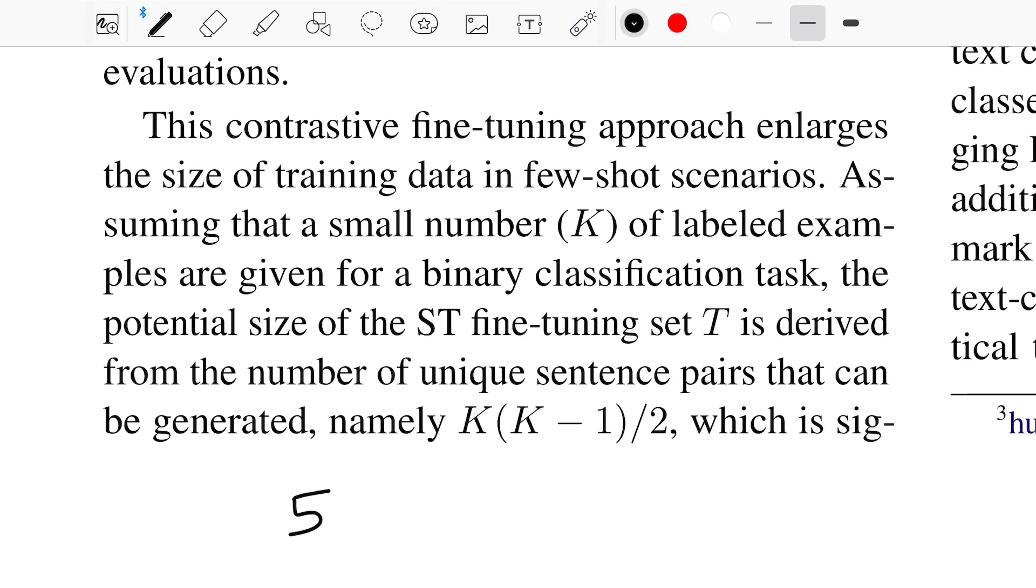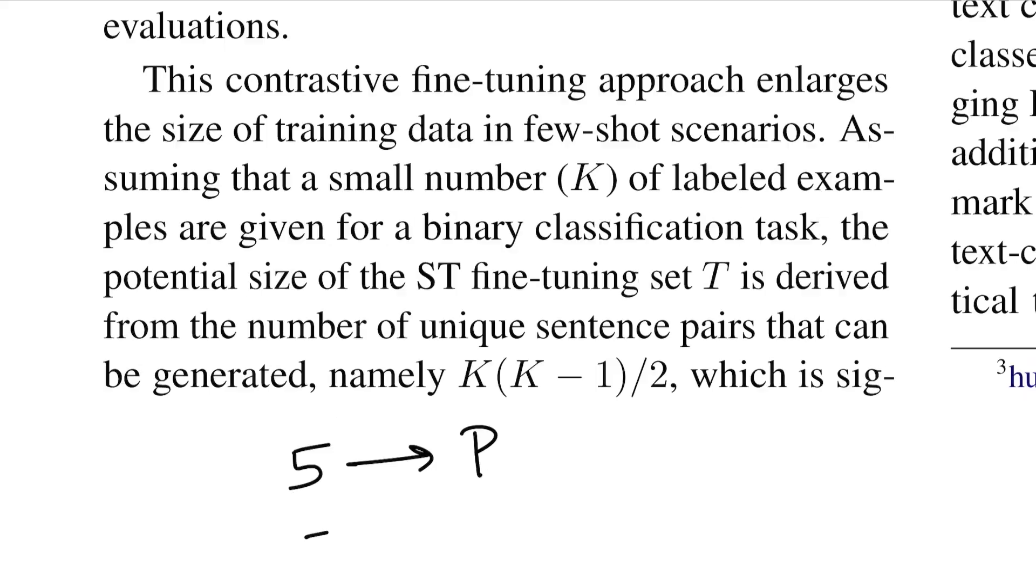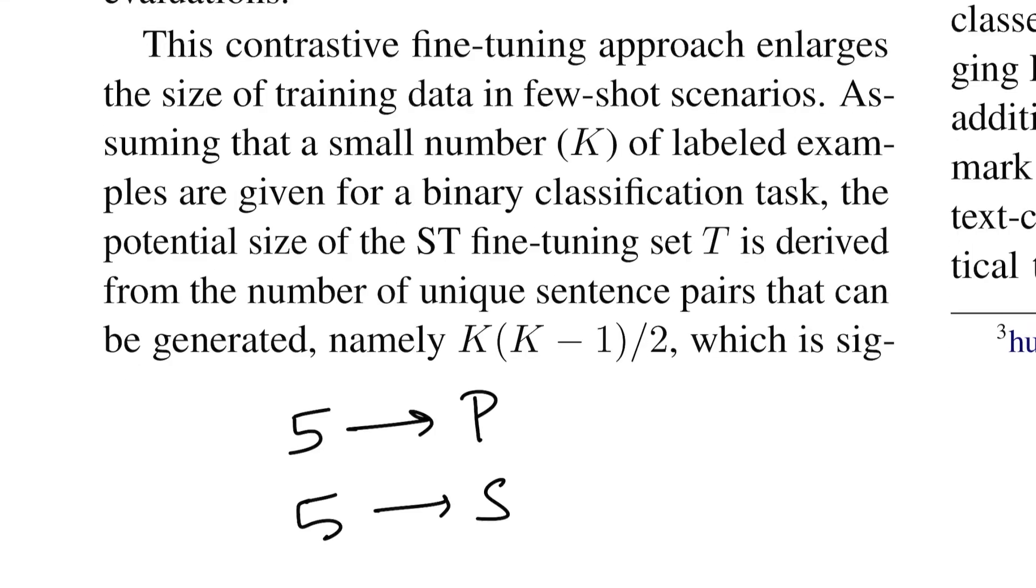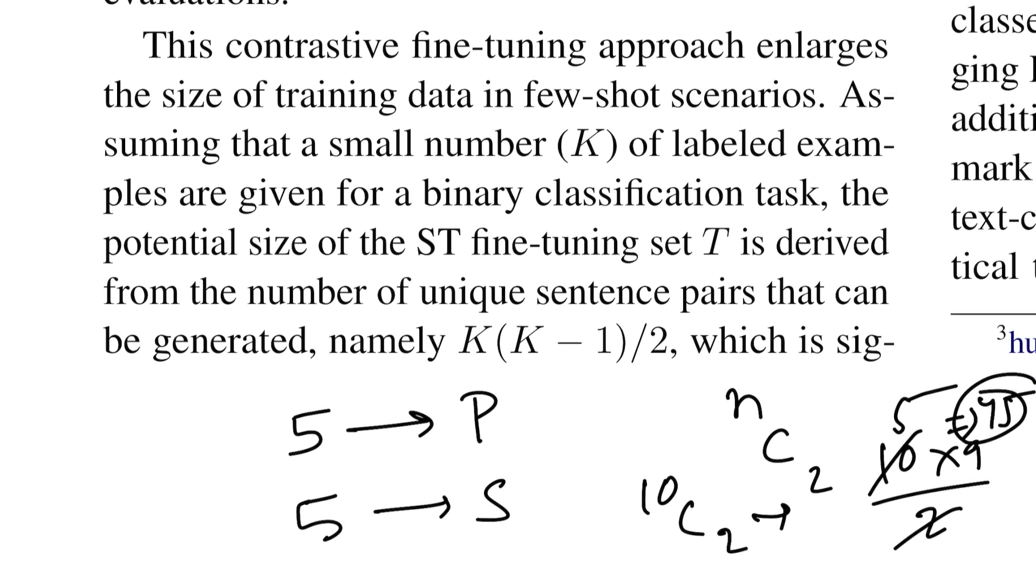You have five samples for the topic of politics and five text samples that represent sports. If you choose any two random samples, which is nC2, in this case 10C2, which comes out to be 10 times 9 divided by 2—total number of 45 samples is what you'll get.